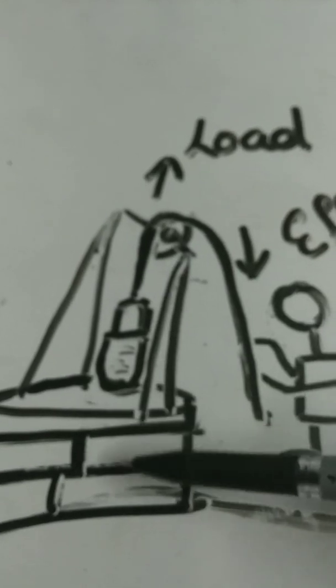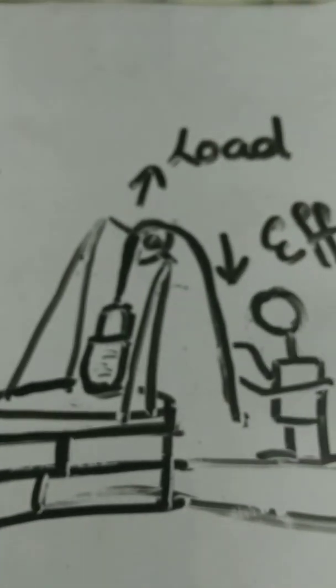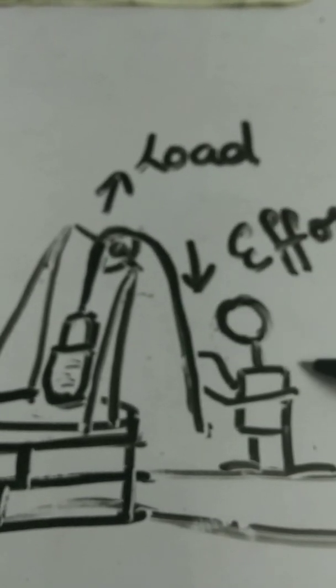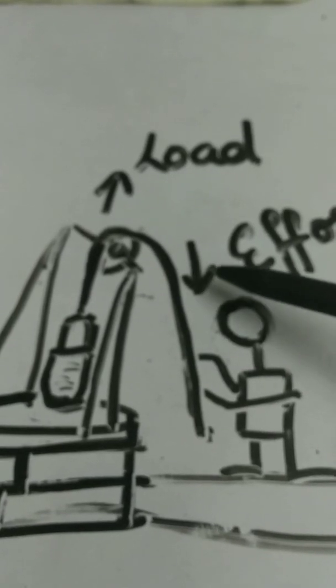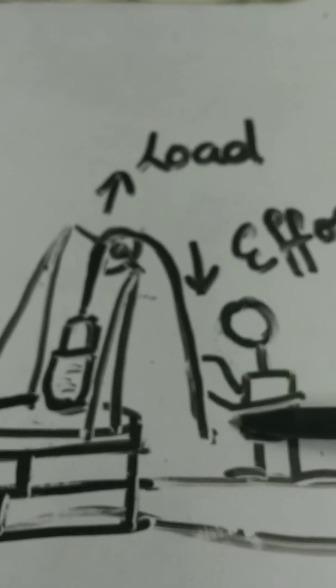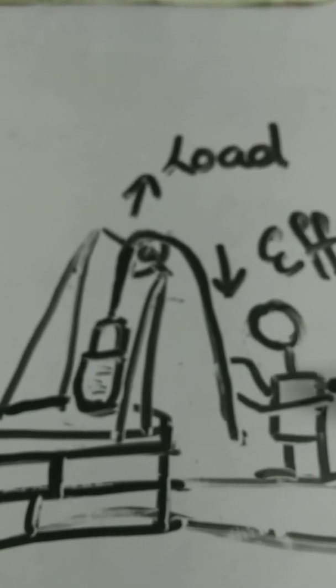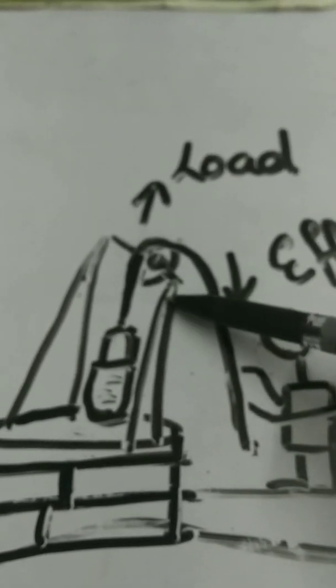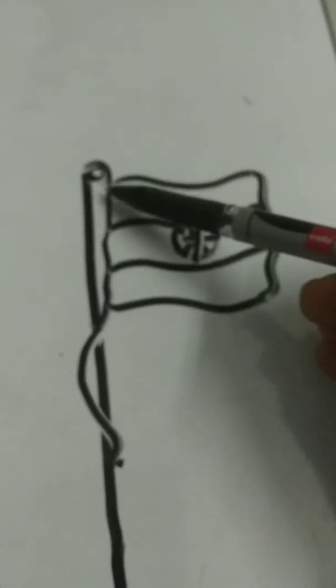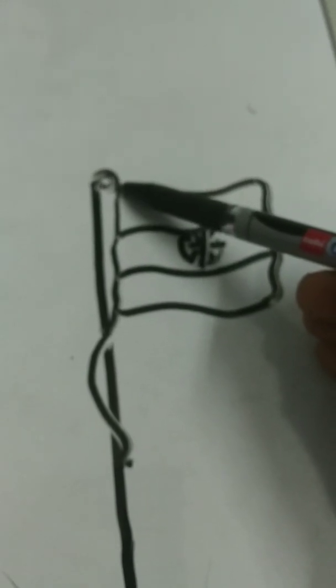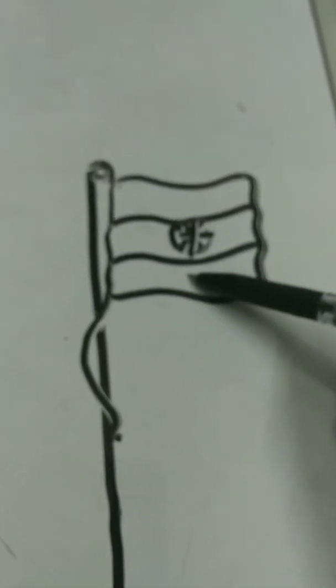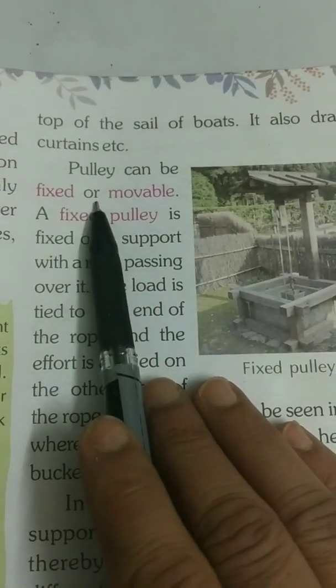A pulley is used to take water out from a well. By applying force downward, the load moves upward — effort and load are applied in opposite directions when using a pulley. The pulley is fixed on top of the flag pole and helps in raising the flag. A pulley can be fixed or movable.